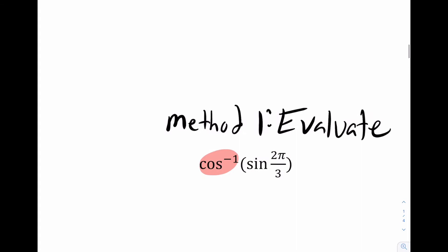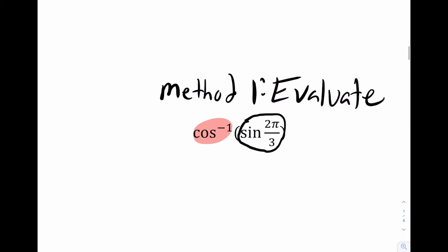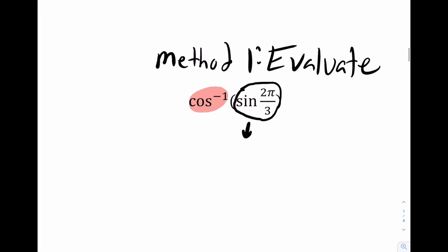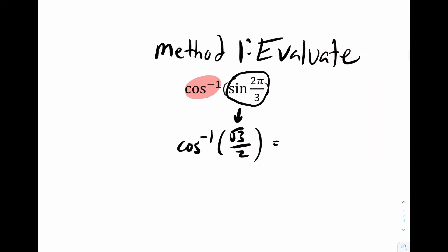So for this one, what I want you to focus on is actually this. I want you to evaluate that. So sine two pi over three. Think about it. That would be root three over two. So really, this becomes cosine inverse of root three over two.